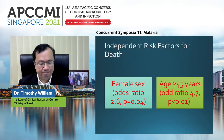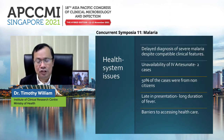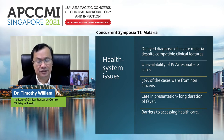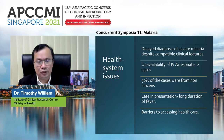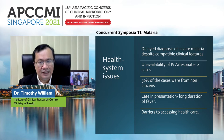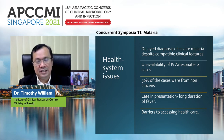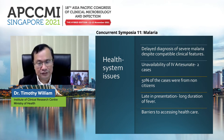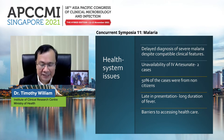There are health system issues as well: delayed diagnosis of severe malaria despite compatible clinical features, which depends greatly on the experience of doctors; unavailability of IV artesunate in some areas; 50% of deaths were from non-citizens where access to care by immigrants is more difficult; and late presentation due to the long duration of illness. This is partly because of the very low threshold for suspecting malaria, and barriers to accessing healthcare in many places in Sabah, Sarawak, and wherever malaria occurs.